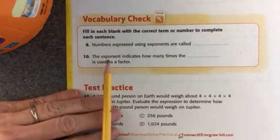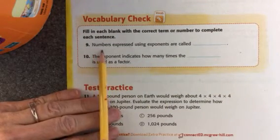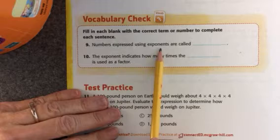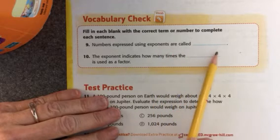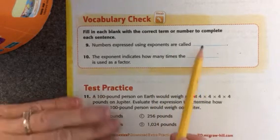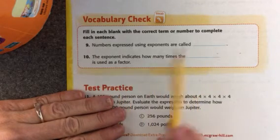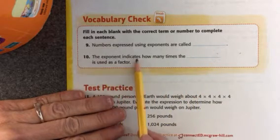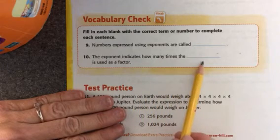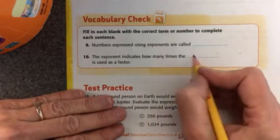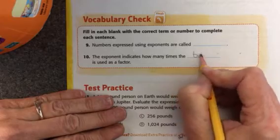Let's look at vocabulary check. Number nine. Numbers expressed using exponents are called... I'm going to look at that one before I tell you what this one is. And the exponent indicates how many times the blank is used as a factor. And we said that that one is a base.